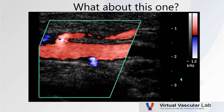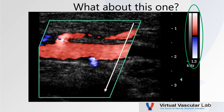Let's revisit this popliteal artery. Check our color box: flow towards is red, flow away is blue. The box is steered to the left. The popliteal artery shows flow towards the transducer — proper direction, left to right. The collateral on top is red — flow towards the transducer, so that's an outflow collateral. The collateral off the bottom is blue — flow away from the transducer — also outflow. This is a normal appearance.